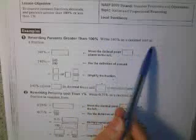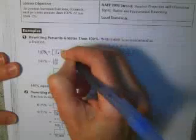Rewriting percents greater than 100%. Write 140% as a decimal and as a fraction. So first, if I start out with 140%, I can move the decimal point two places to the left. So one, two, and you lose your percent sign. When you want to lose the percent sign, move to the left two places. It might be helpful, the L and the L.